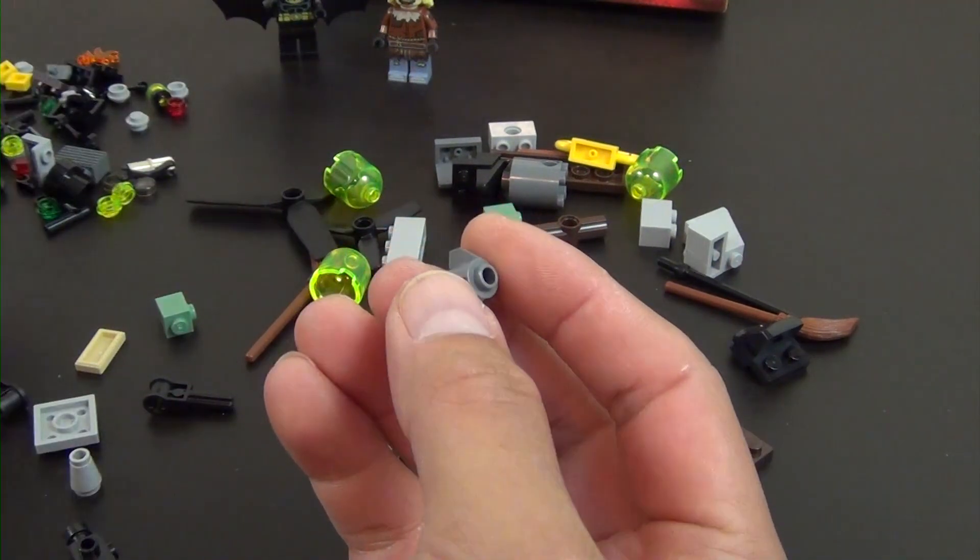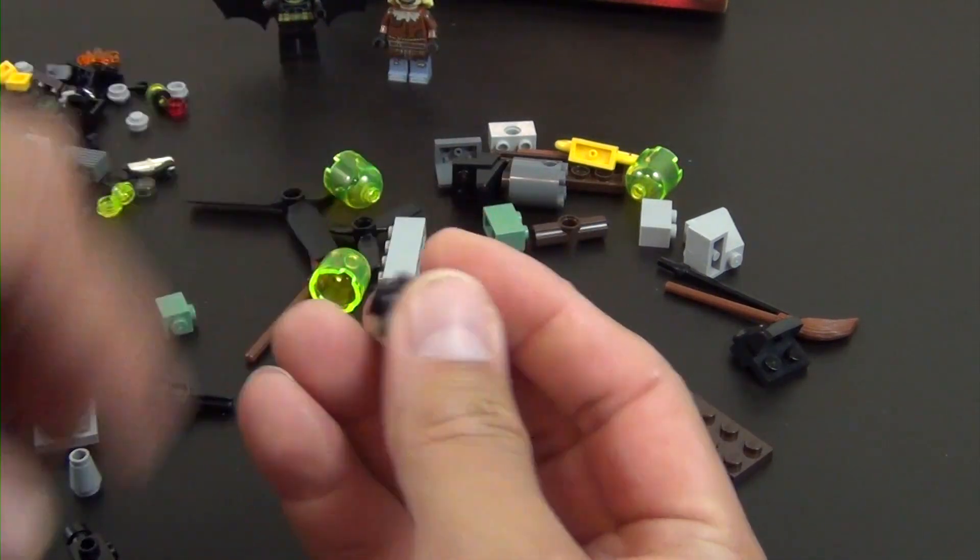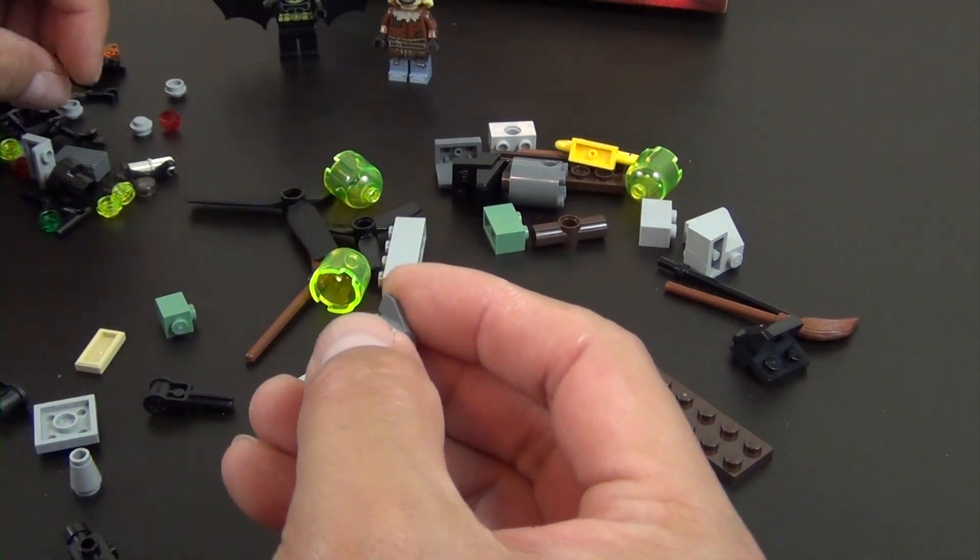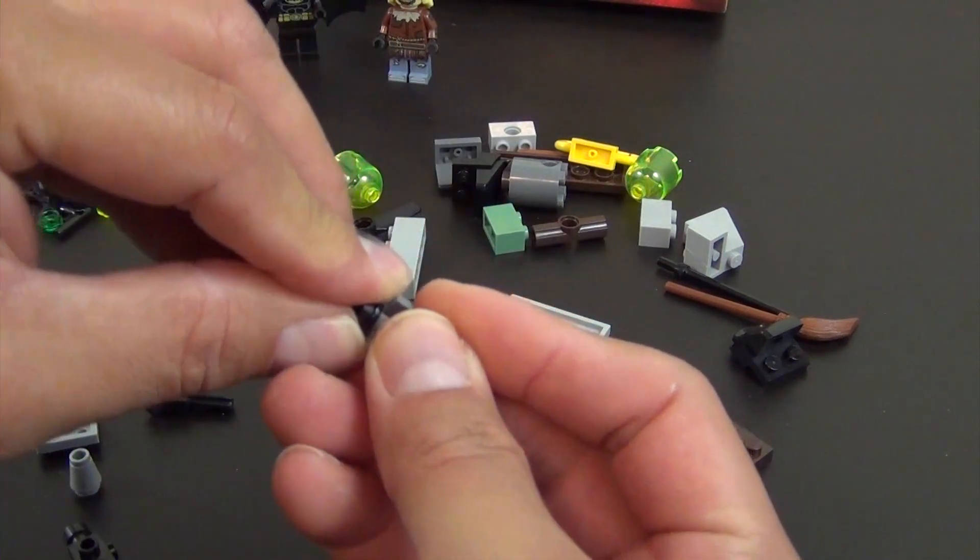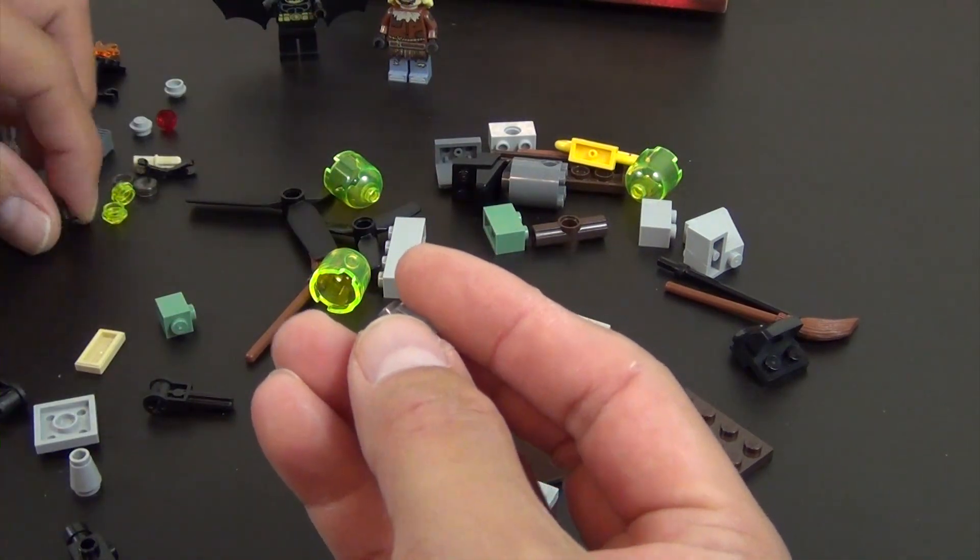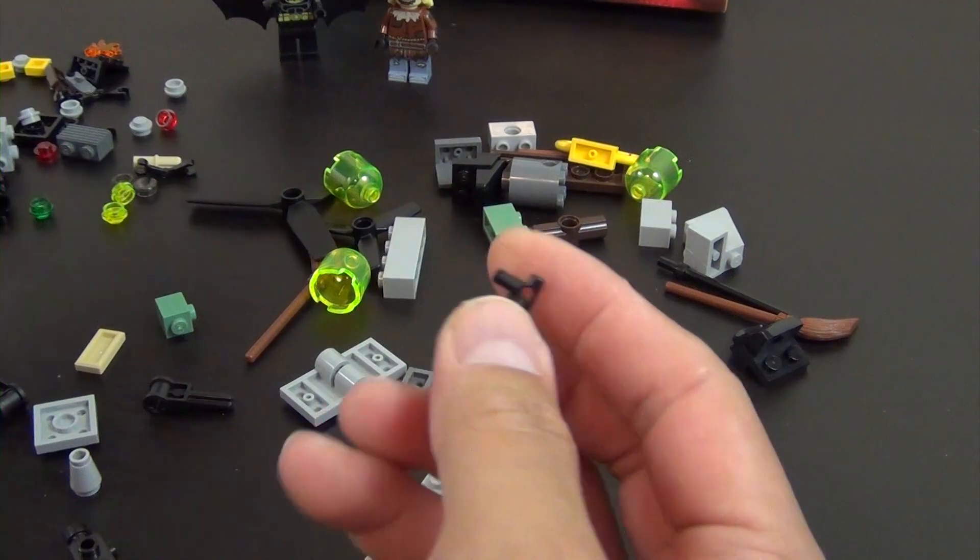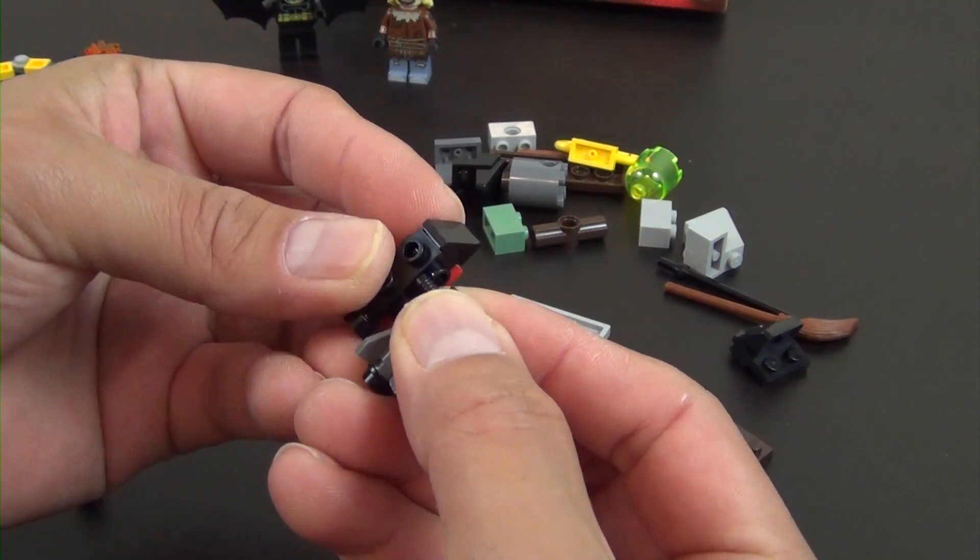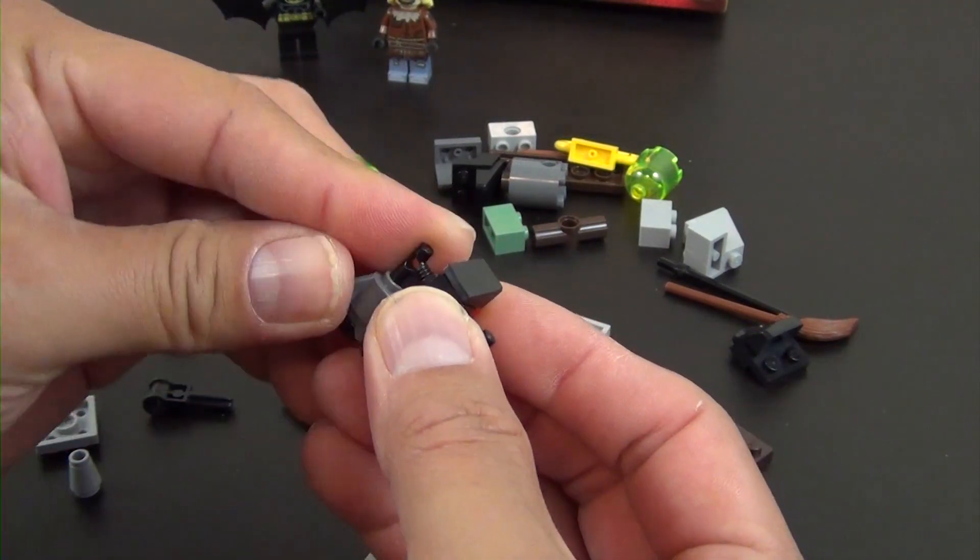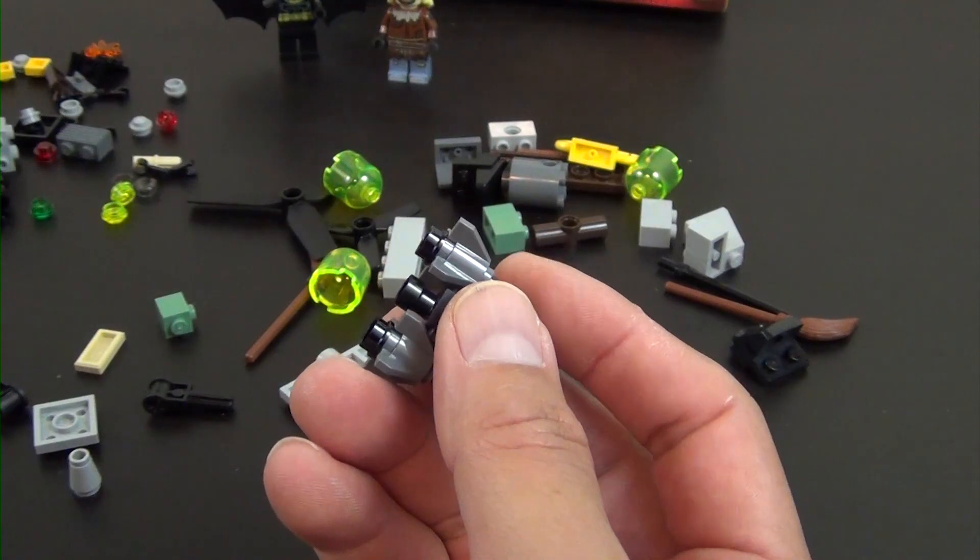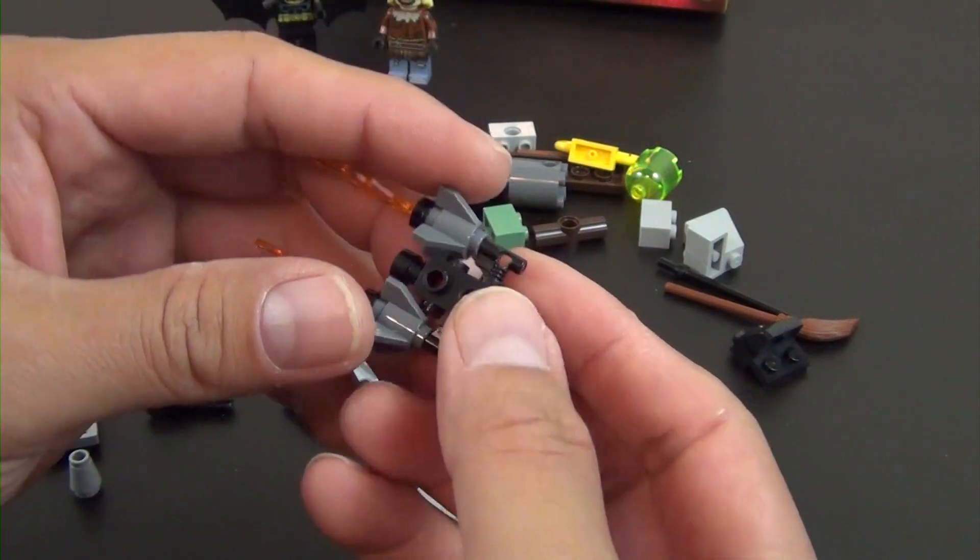So we take these little rocket end pieces, put a stud that has a hole on it. And then we'll attach these little handle pieces. Each one of the handles goes into a hole on the side of these studs.